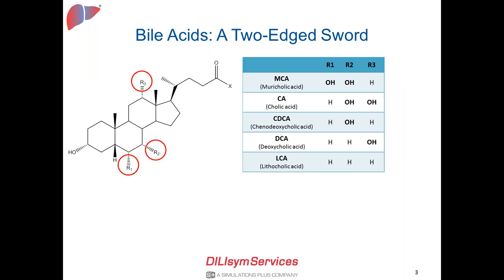For those who are new to this area, bile acids are the end product of cholesterol metabolism. As you can see on your left, these are the backbone of bile acids, which have steroid backbones. Basically, the liver processes cholesterol to generate bile acids and eliminate them into the bile. There are different kinds or species of bile acids; the five major ones are listed in the table on your right.